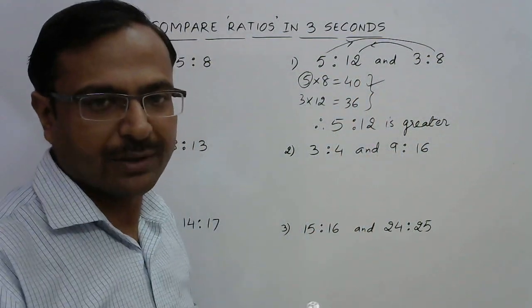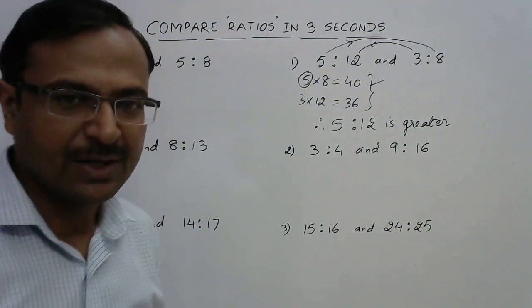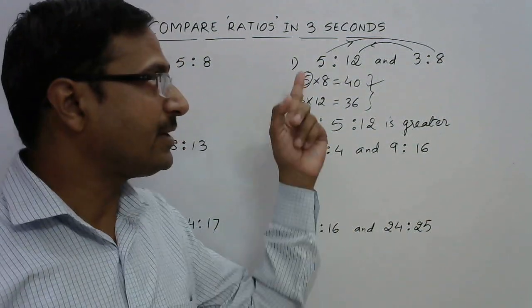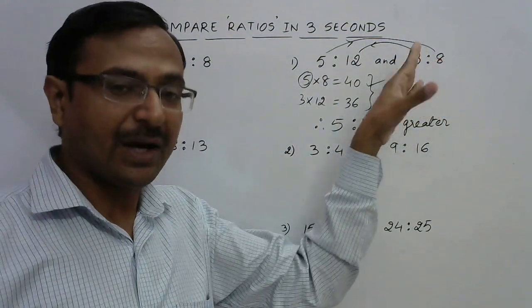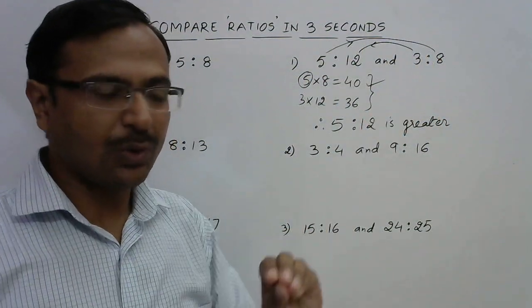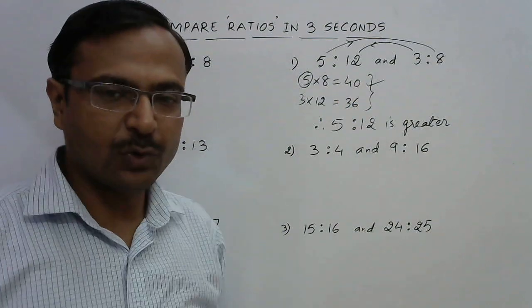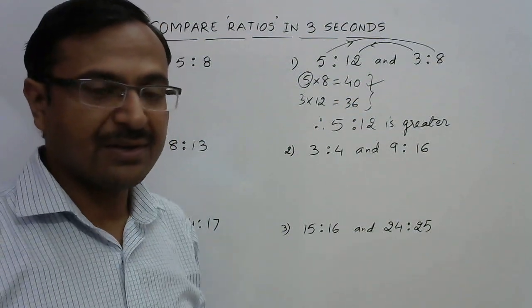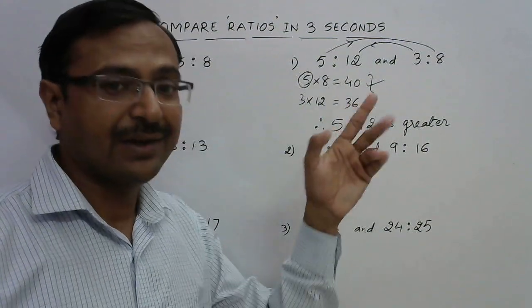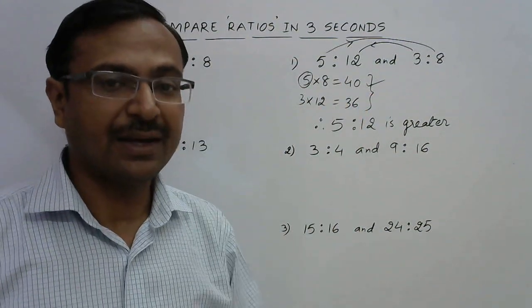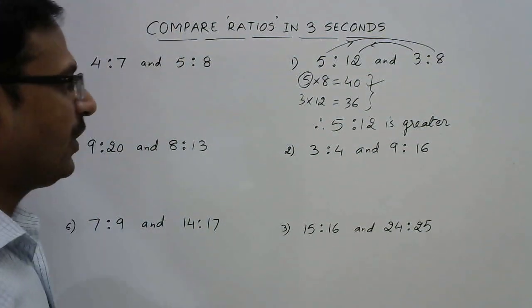On multiplying the first term of any ratio with the second of the other, you obtain a product, and you have to compare those products. Whichever ratio's first term is multiplied to get the larger product, that ratio is the greater ratio.